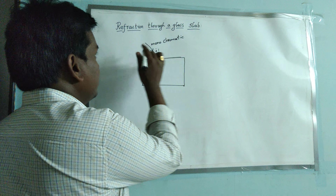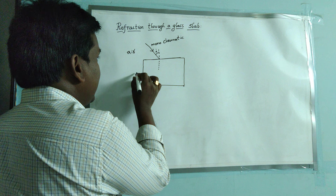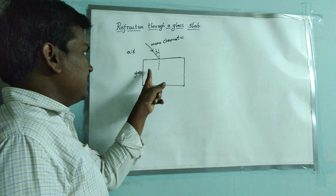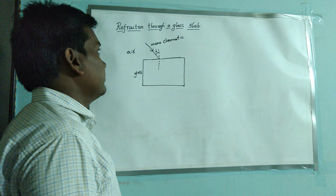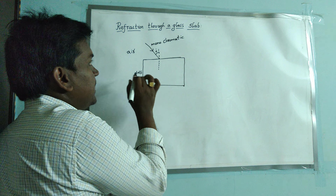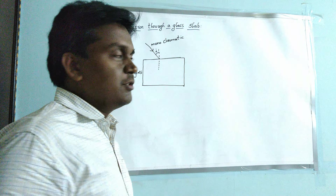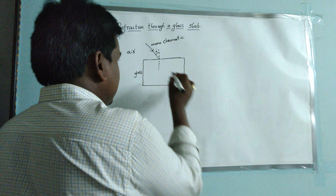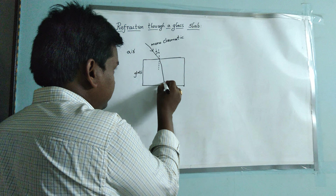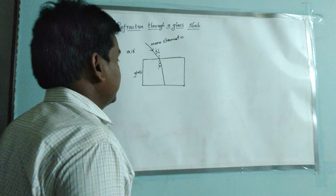Consider this medium as air and this as glass. Air is a rarer medium and glass is a denser medium. The light ray is travelling from an optically rarer to a denser medium. When a light ray travels from optically rarer to denser, it bends towards the normal. It bends towards the normal, and this is the angle of refraction.